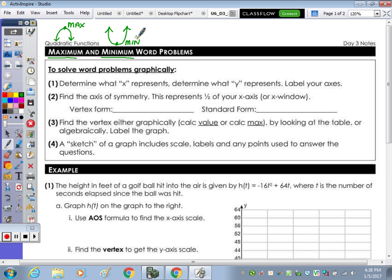The steps are there at the table at the top. Step number one, determine what x represents and determine what y represents, and label your axes. So what are your variables? You have to determine that and then label your axes. Find the axis of symmetry. This represents half of your x-axis or your window. And remember, the equation for the axis of symmetry, we'll put this on the side as a reminder, is x equals negative b over 2a.